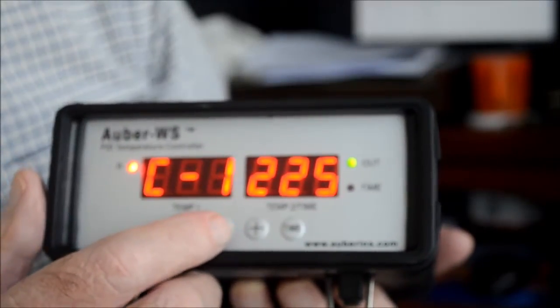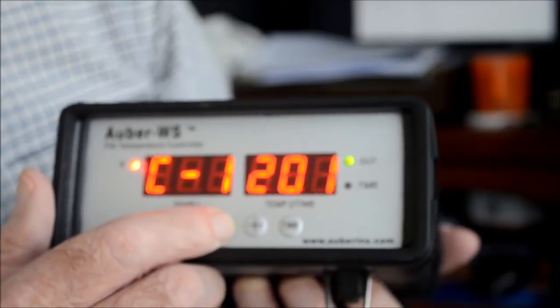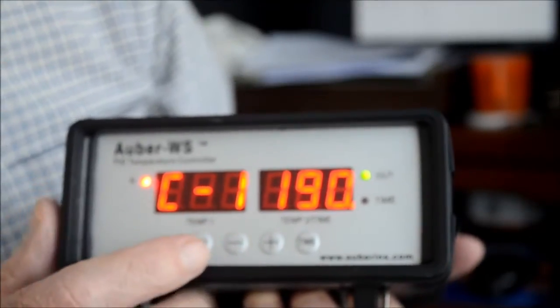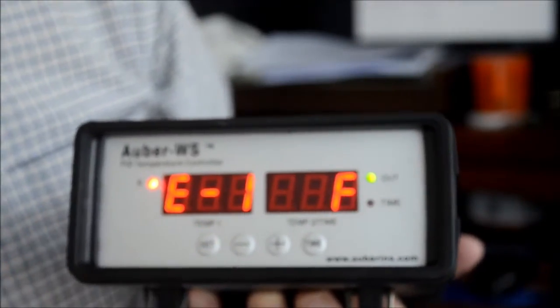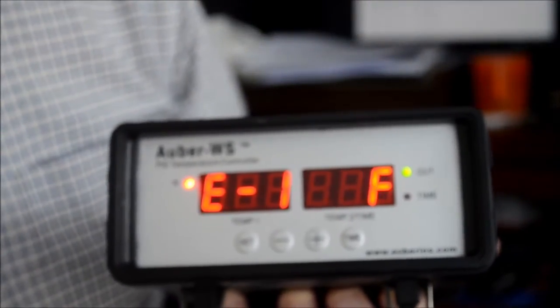You want to set C1, if you want to go for 190, go there, and then set. That's set the temperature to cook at 190.